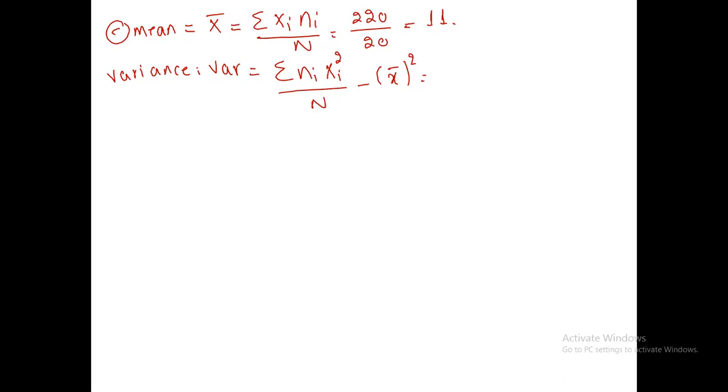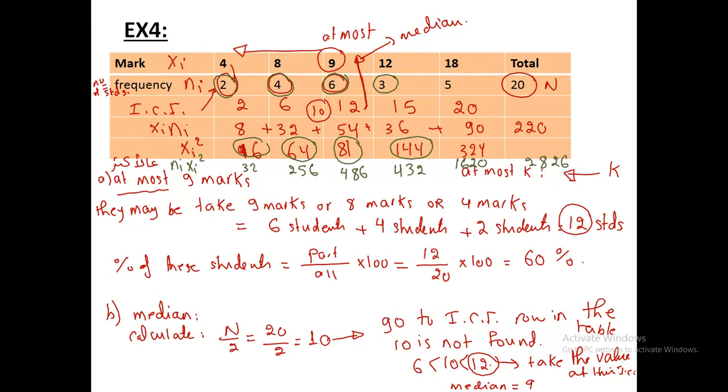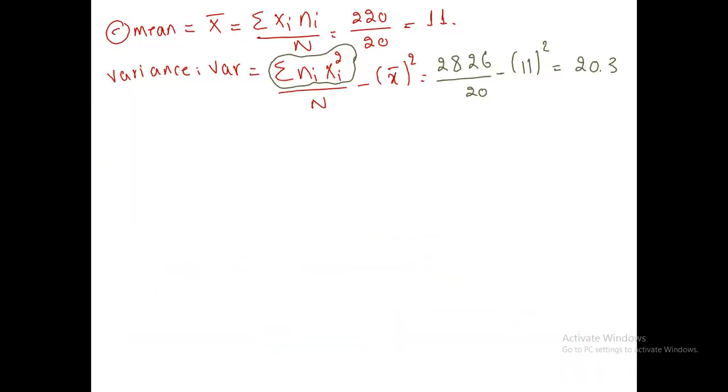So the variance is summation of ni·xi² which is 2826 over n which is 20 minus x̄² which is 20.3. Now we want to find the standard deviation. It is denoted by sigma and it is radical of variance. It is radical of 20.3 and we will get 4.50.